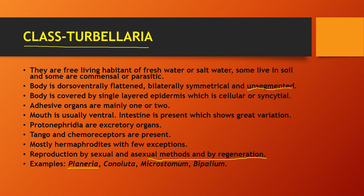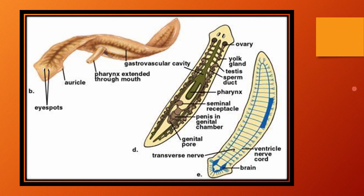Now we will move to Class Trematoda. Let's look at the Planaria anatomy diagram. Here you can see the gastrovascular cavity, the eye spot, the auricle, and the pharynx extended through the mouth.